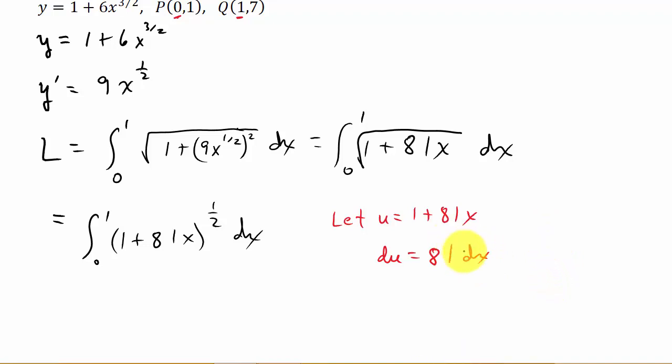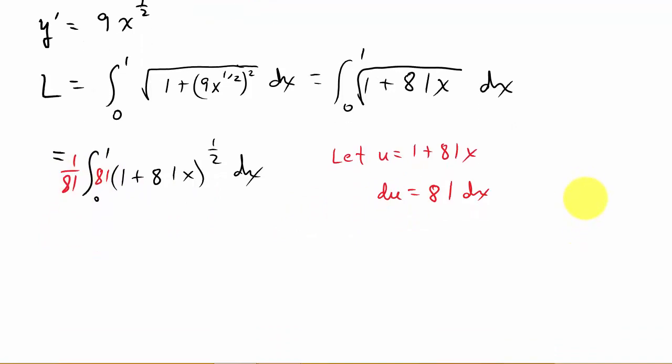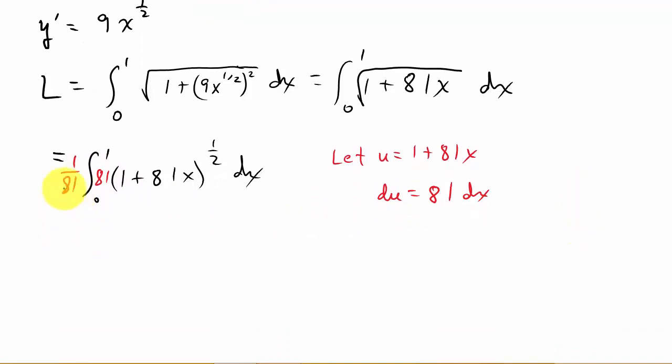Alright. So when I do the u substitution, I'm going to plug u in for 1 plus 81x. But now I've got to worry about the du. Well, all I have out here is dx. I need an 81. So if I multiply by 81, that gives me my 81 dx that I can replace with du. But since I'm multiplied by 81, I have to also divide by 81.